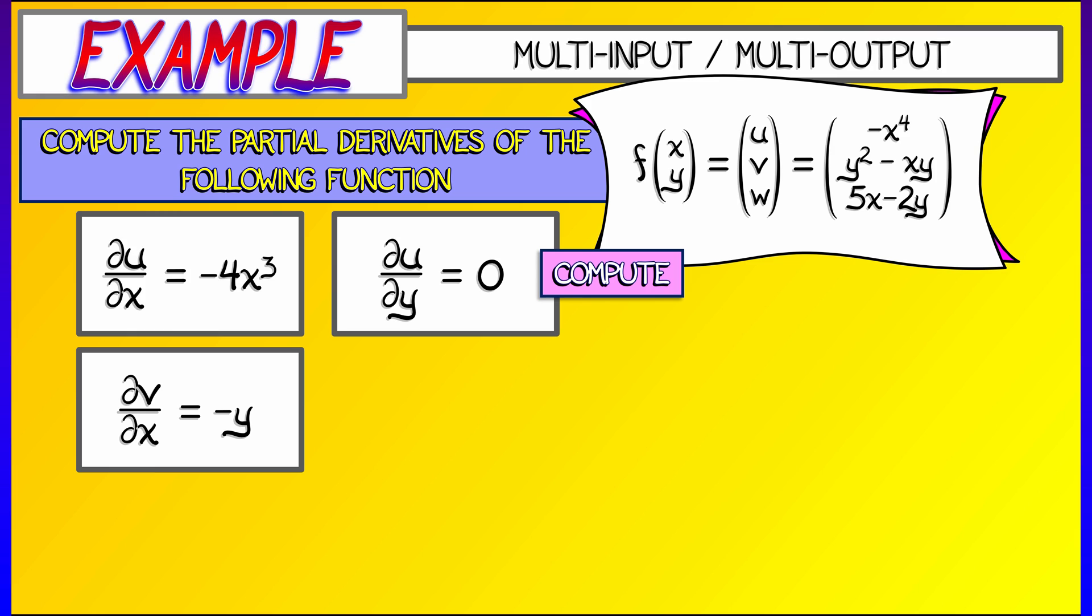And you say, well, there's no y's there. The first, I take the derivative of y squared, that's 2y. The second, I take the derivative of minus x times y, that's minus x.